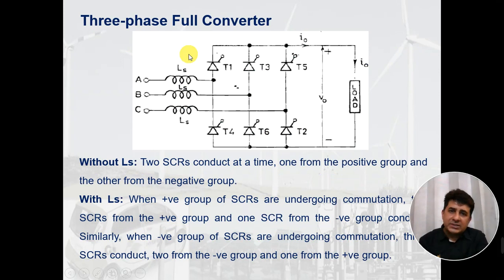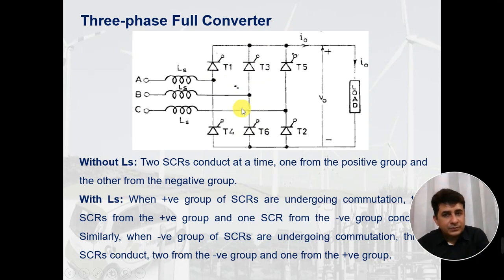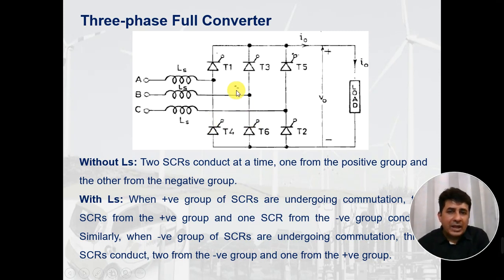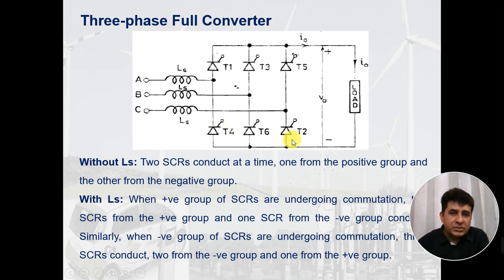Now let us see the effect on three-phase converters. In a three-phase full converter, at any time two devices are conducting — one device from the positive group (thyristors 1, 3, 5) and one from the negative group (thyristors 4, 6, 2). Each thyristor conducts for 120 degrees, while each combination conducts for 60 degrees.